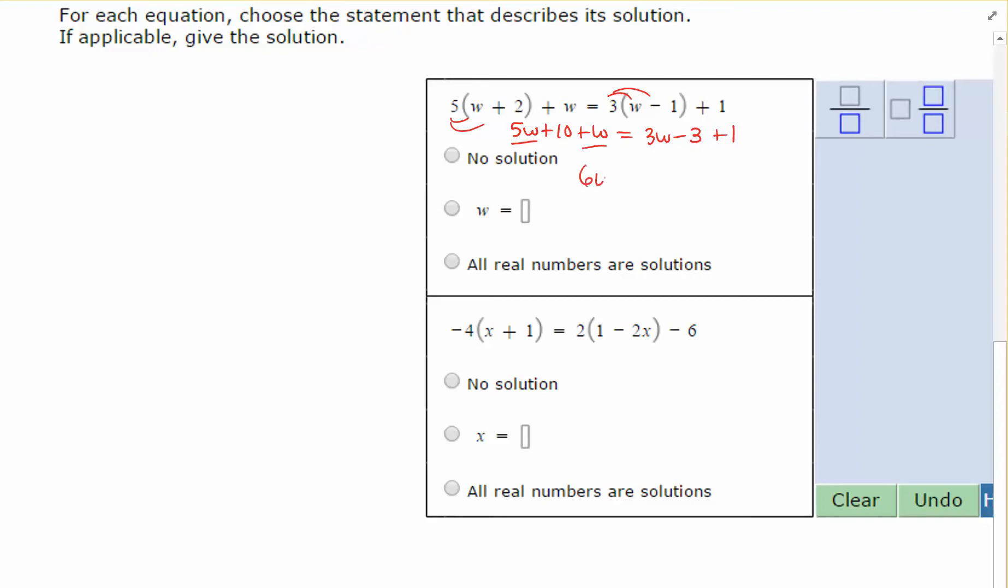Now in this first equation, I get 5W plus 10 plus W is equal to 3W minus 3 plus 1. 5W plus W is 6W plus 10 equals 3W, and negative 3 plus 1 is negative 2. Now if you look at this on both sides, you'll notice that the W's are not the same, and therefore the W's will not cancel out. So I am going to get a solution on this if I continue to solve the equation.